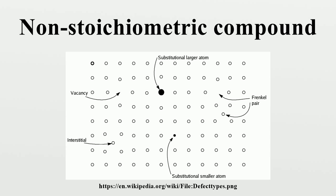The non-stoichiometry reflects the ease of oxidation of Fe2+ to Fe3+, effectively replacing a small portion of Fe2+ with two-thirds their number of Fe3+. Thus, for every three missing Fe2+, the crystal contains two Fe3+ to balance the charge.